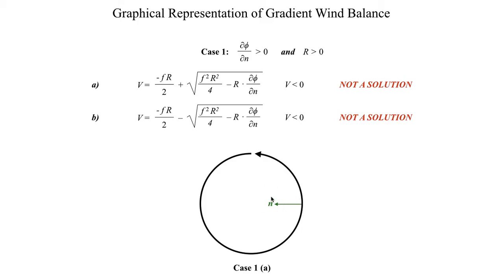This is important because r gives you an idea of what direction the n-hat, or the normal axis, points, and you need to know that information because of this term. So what this term tells me is that as I go in the direction of n-hat, towards higher values of n-hat, then my geopotential must be increasing — or also, my pressure must be increasing.